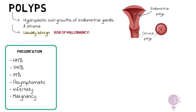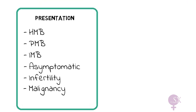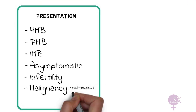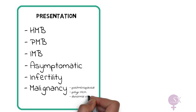Polyps might also be malignant, so especially in postmenopausal women with a polyp size of more than 1 cm and abnormal uterine bleeding, the chances of a malignant polyp are higher.